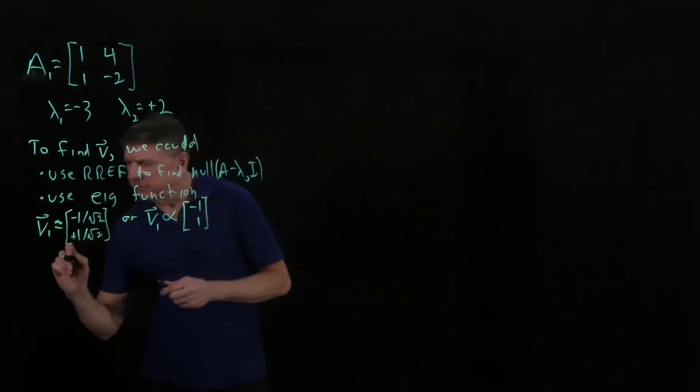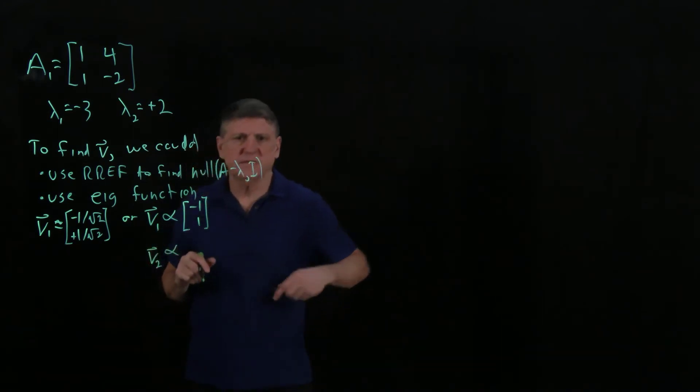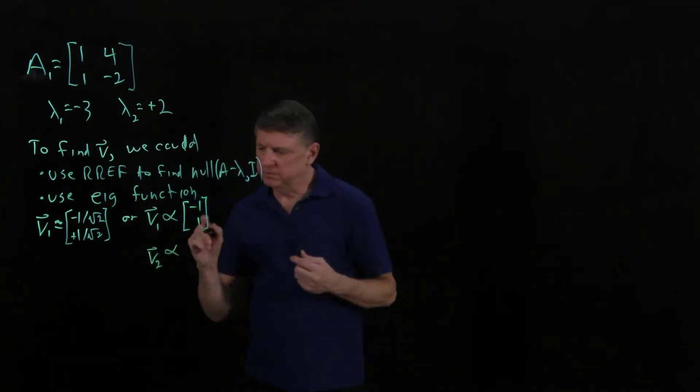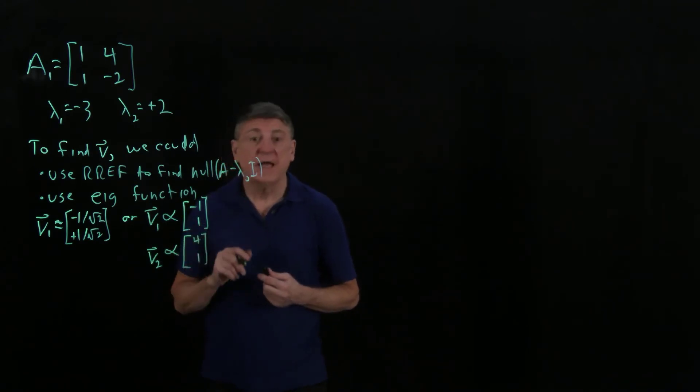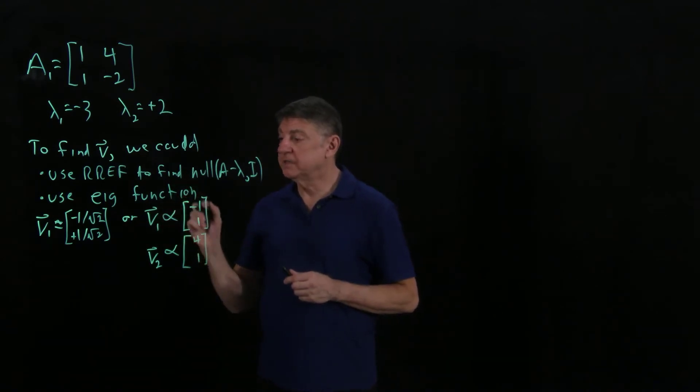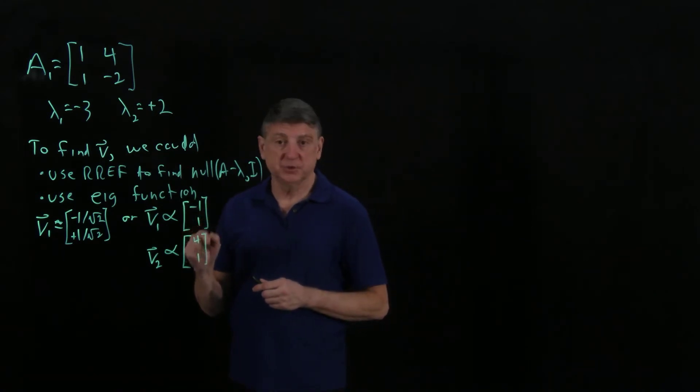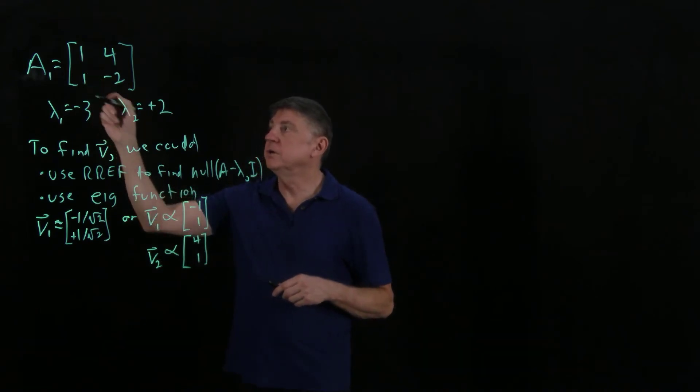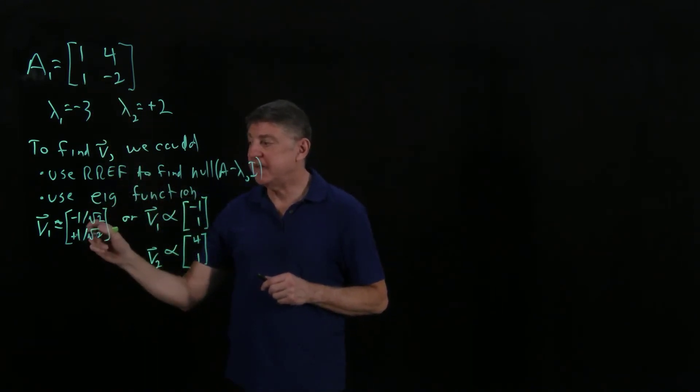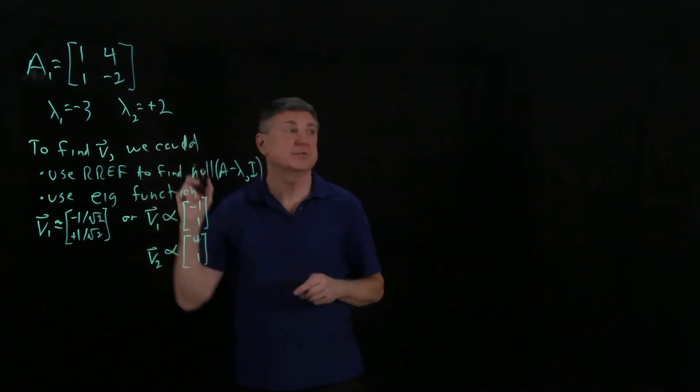Similarly, if we go through v2, we'll find it will give us something involving more square roots, and that would be proportional to 4, 1. When we have these eigenvectors, we could then form, we'd prefer to put them into this unit form, so I would have to divide these by the square root of 17, and so on. What we could do is actually find the matrix E that transforms A into the diagonal matrix where the first entry is minus 3, and the second entry is plus 2.